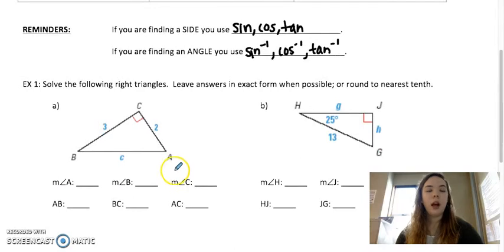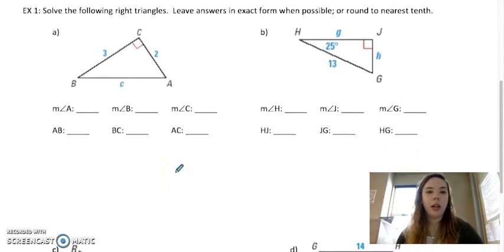For part A they already gave us AC is 2 and BC is 3. So what I'm going to do is go ahead and let's say we want to start with angle A. 3 is opposite and 2 is adjacent. So I would use tangent because that's opposite and adjacent.